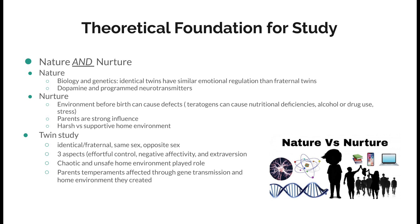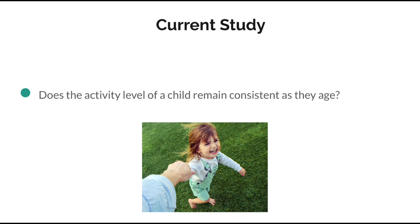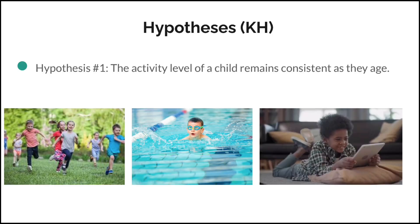So in conclusion, nature and nurture both play equal effects on a child's temperament and how they grow up. We know that temperament looks at the individual from many perspectives, including emotion, activity level, and attention. But for our specific current study, we want to examine whether the activity level of a child remains consistent as they age, looking at younger children and older children for any possible differences or connections. Our group hypothesis is that the activity level of a child remains consistent as they age.